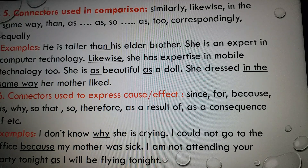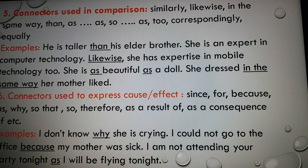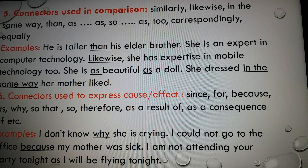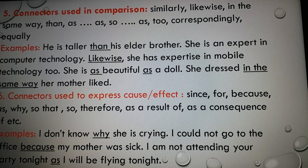Number six: connectors used to express cause or effect. Examples of such connectors: since, for, because, as, why, so that, so, therefore, as a result of, as a consequence of, etc. Examples: 'I don't know why she is crying.' 'I could not go to the office because my mother was sick.' 'I am not attending your party tonight as I will be flying tonight.' Here you see connectors used to show cause and effect.